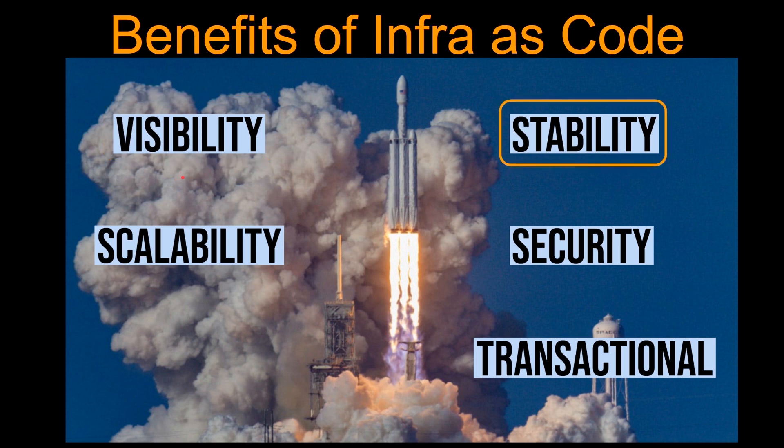Next is stability. If you accidentally change the wrong setting or delete the wrong resource using the console, you can break things. But infrastructure as code is a piece of code, so you can version control it using Git. You can have a proper branching strategy, review it, and then standardize the template. It helps prevent those kinds of accidental mess-ups.